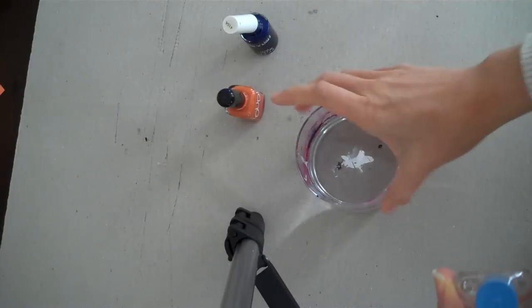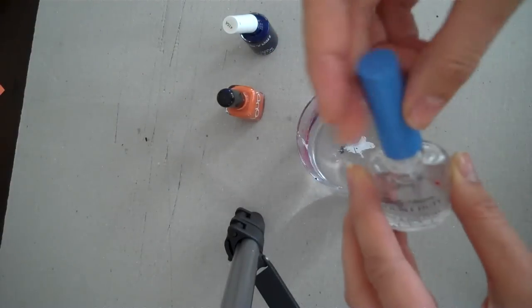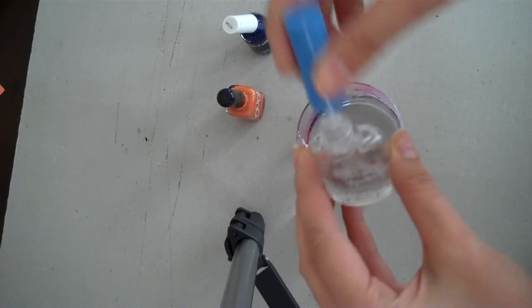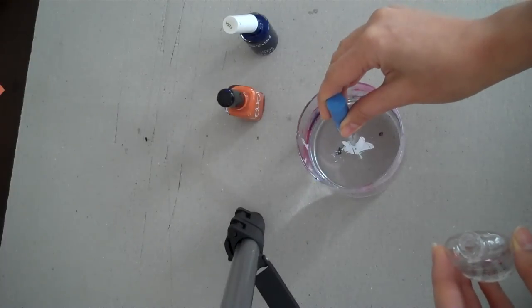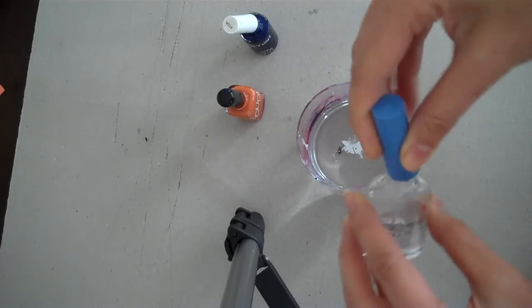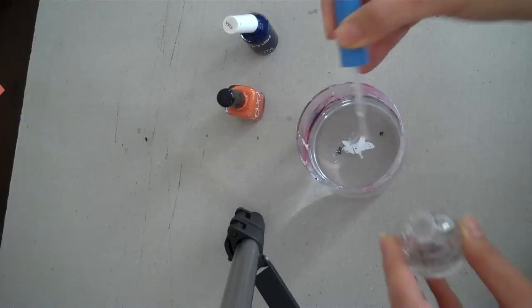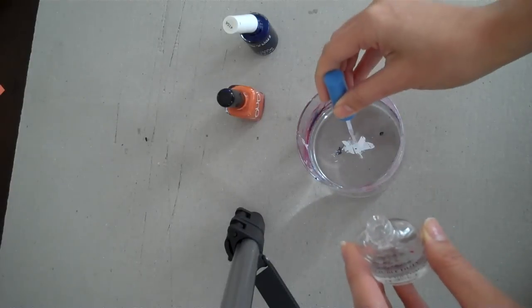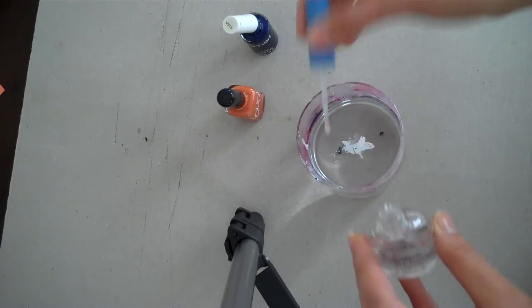So I'm going to start with, this is just room temperature water that's run through the Brita filter and I'm going to just drop a couple of drops of clear in here. Actually that's three drops of clear.